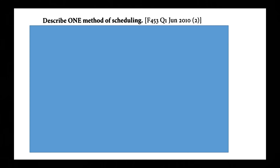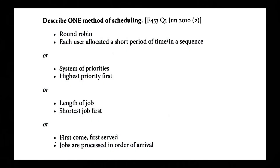Describe one method of scheduling: round robin — each user is allocated a short period of time in a sequence; or system priorities — highest priority first; or length of job — shortest job first; or first come, first served — jobs are processed in order of arrival.